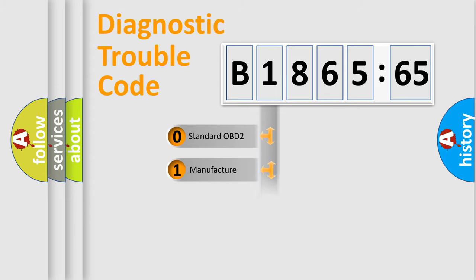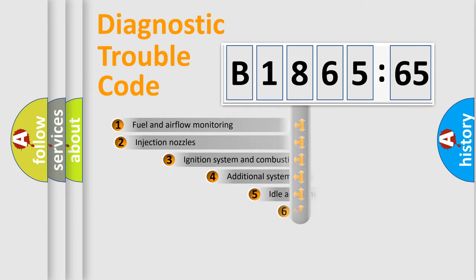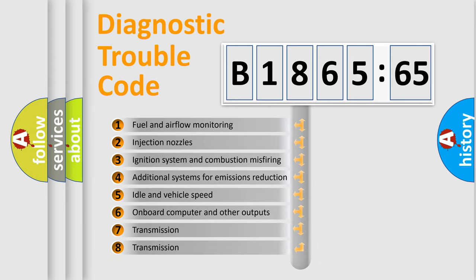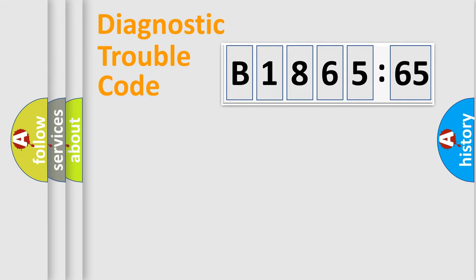If the second character is expressed as zero, it is a standardized error. In the case of numbers 1, 2, 3, it is a more specialized expression of the car-specific error. The third character specifies a subset of errors. The distribution shown is valid only for the standardized DTC code.